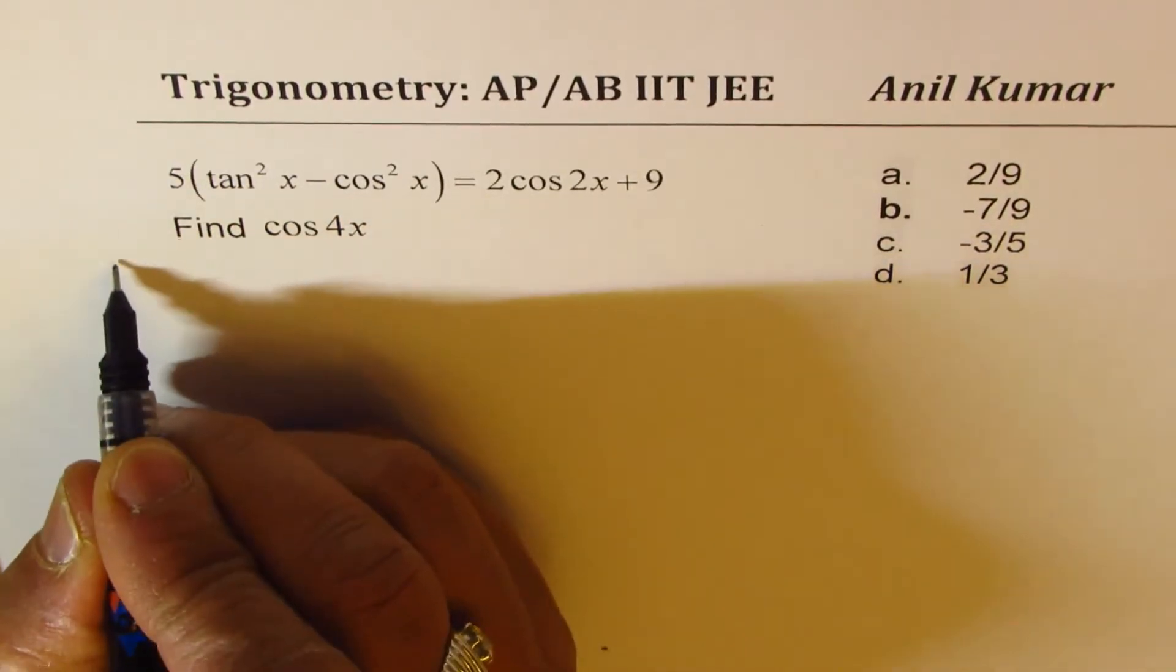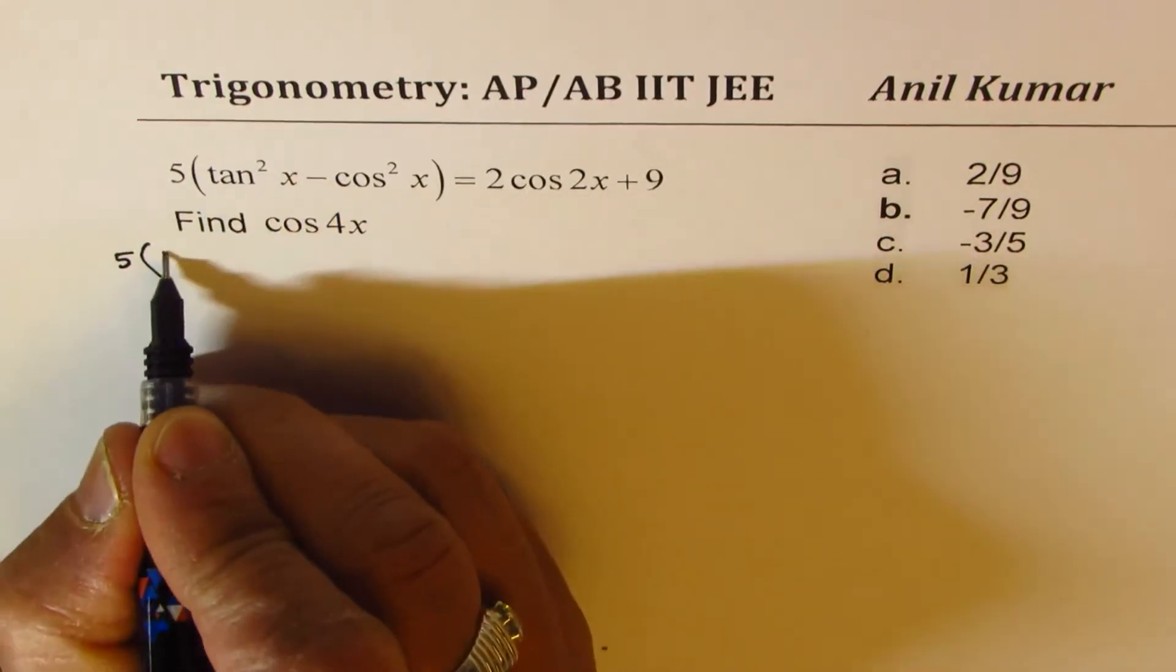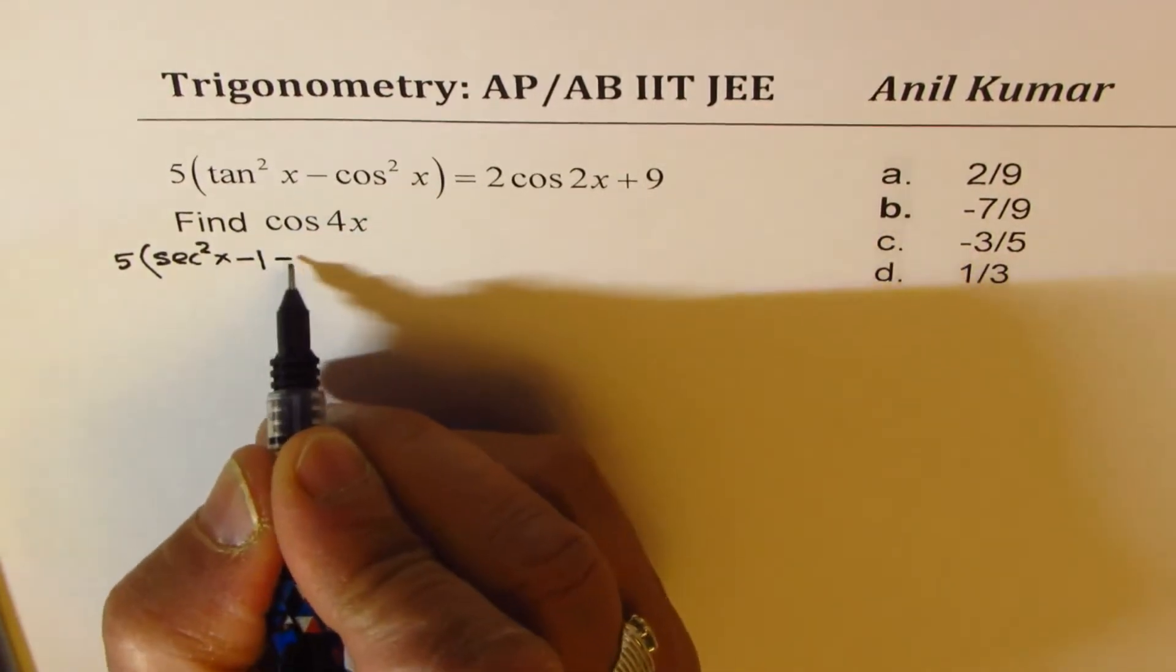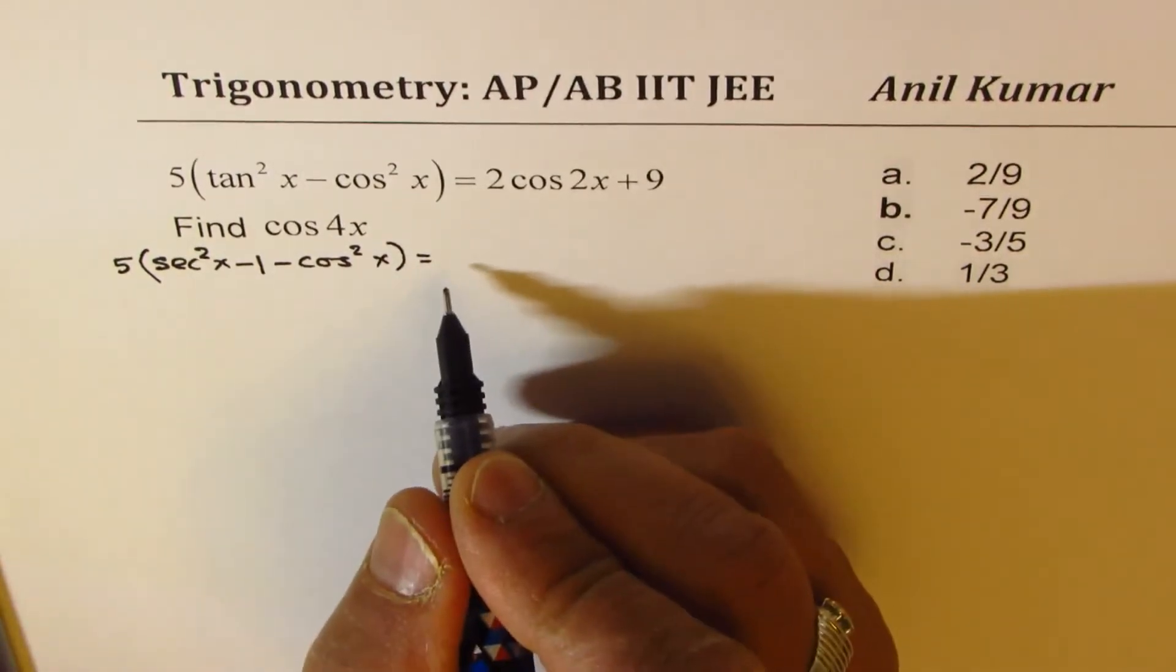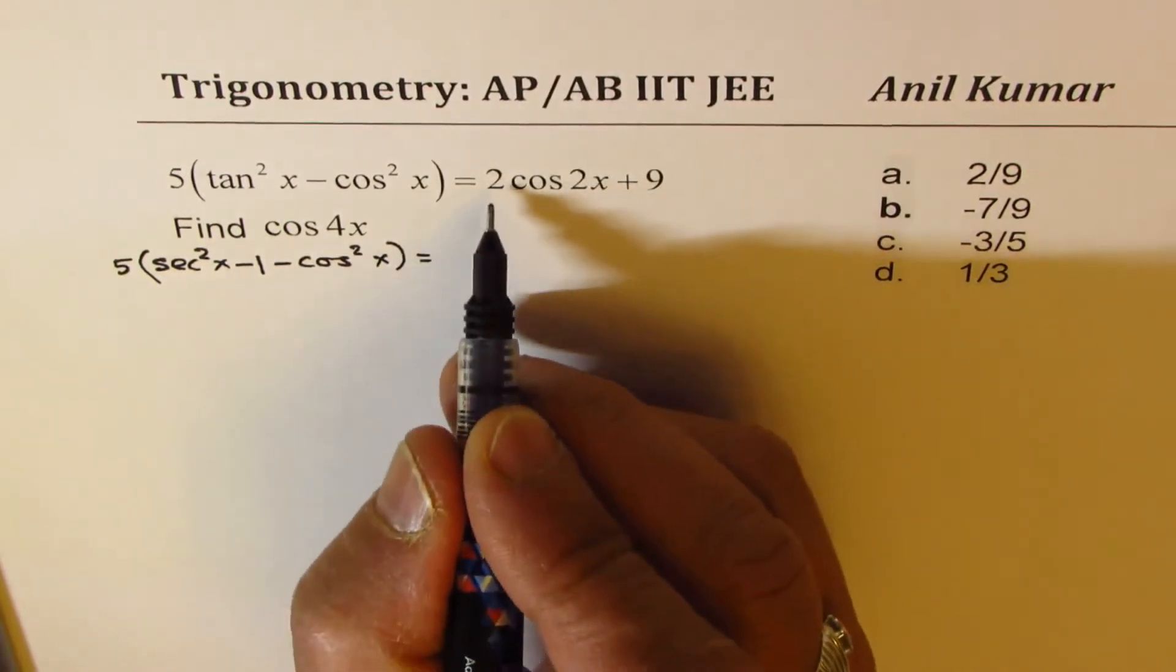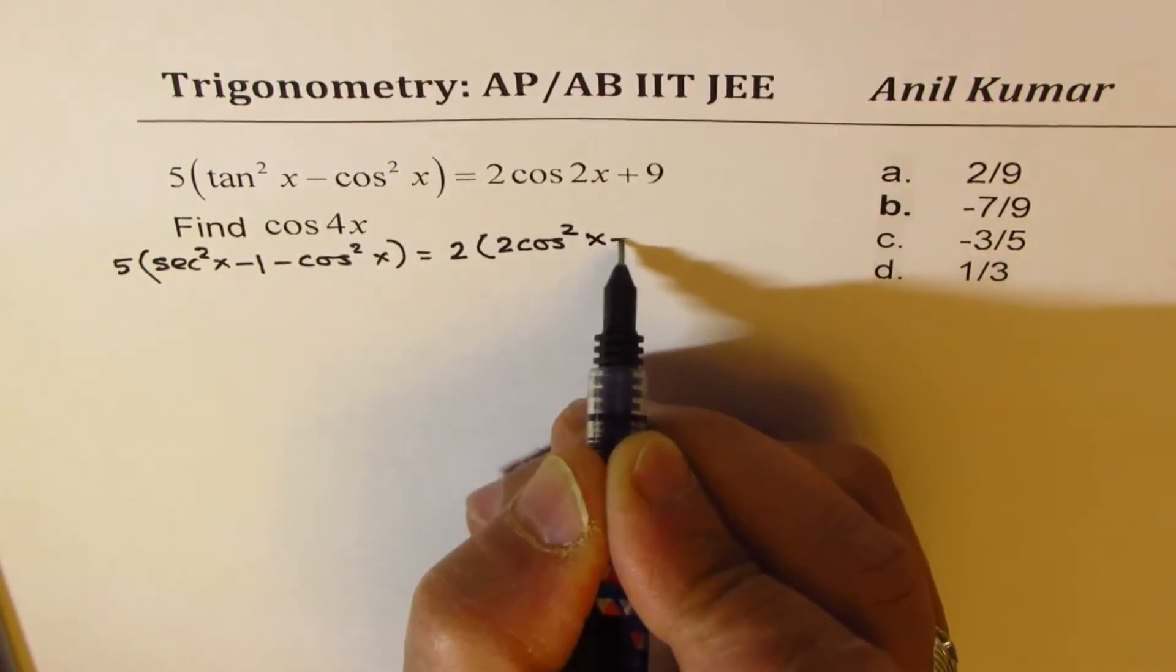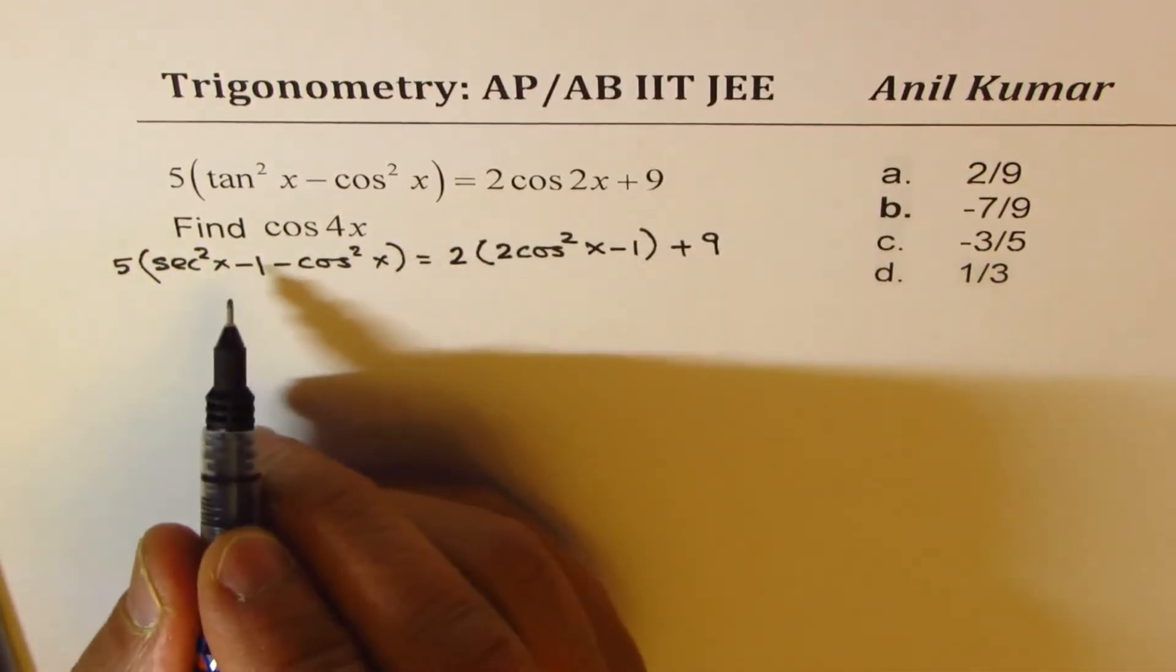So let's begin by writing the left-hand side as 5 times tan square x can be written as secant square x minus 1. We have cos square x here, minus cos square x equals 2. Now, cos 2x can be written as 2 cos square x minus 1. So it becomes 2 times 2 cos square x. That's a double angle formula.